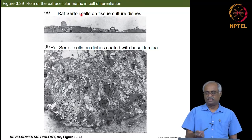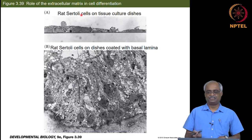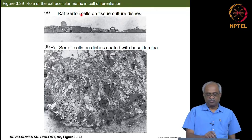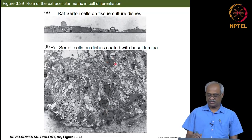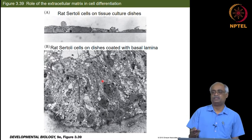Here we have rat Sertoli cells — Sertoli cells are important for germ cells to proliferate in the mammalian testes. When you grow isolated Sertoli cells in a plain tissue culture plate, they just grow as a flat layer. But if the plate is coated with the right ECM, they differentiate into the tubular structure that provides the niche where germ cells differentiate. Without Sertoli cells, you will not have germ cells formed in the testes.